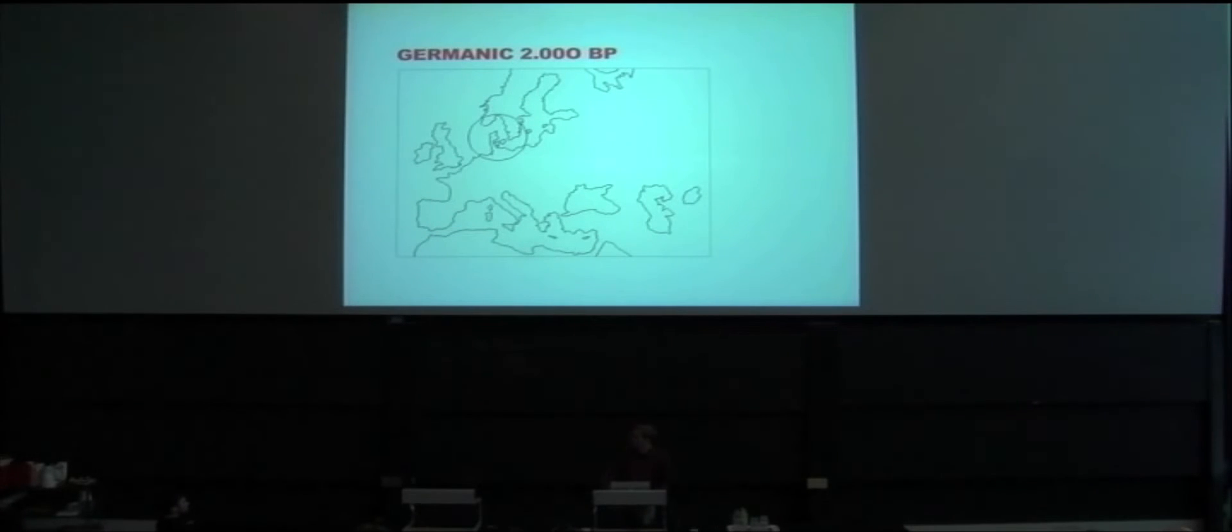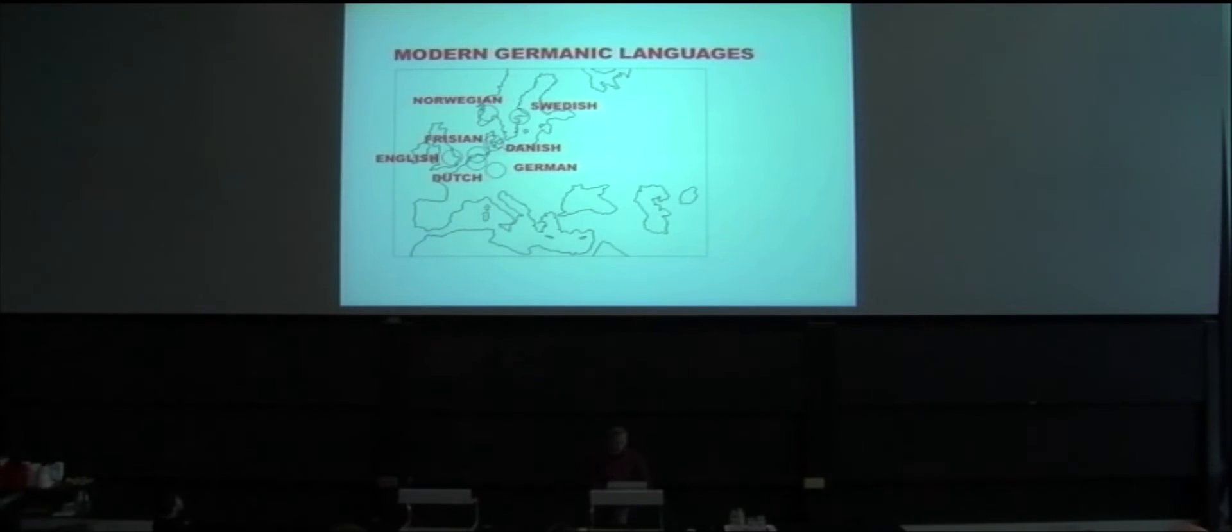My expertise is mainly on the Germanic languages. Germanic homeland was situated in Scandinavia and northern Germany some 2,000 years ago. From there it spread somewhat more to the west and the south, and also to the north, resulting in the modern Germanic languages as you see them here: Norwegian, Swedish, Faroese, English, Dutch, German, and Danish of course.